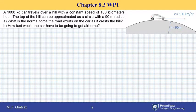Here we have a 1000 kg car that travels over a hill with a constant speed of 100 km per hour. At the top of the hill, the radius of curvature is given as 90 meters. We're interested in finding the normal force exerted by the road on the car as it passes over the top of the hill. And then in part B of the problem, we want to know how fast the car should be traveling so that it becomes airborne at the top of the hill.